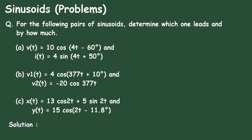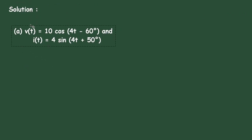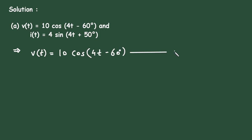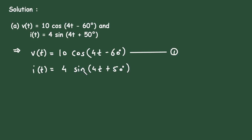Here is Problem A. The sinusoidal voltage V(t) is given as 10 cos(4t − 60°) — this is in standard form, so let's call this equation 1. The sinusoidal current I(t) is given as 4 sin(4t + 50°). This is not in standard form — it is in sine form, so we need to convert it into positive cosine form.